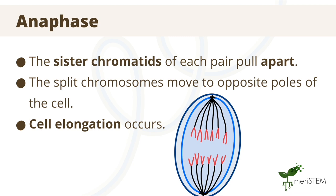In the anaphase, sister chromatids are pulled apart. Note that chromatids are one half of a duplicated chromosome, and sister chromatids are the identical copies of a chromosome that are joined together by a common centromere. The split sister chromatids, now their own chromosomes, move to the poles of the cell. The cell then begins to elongate, as we can see in this diagram.